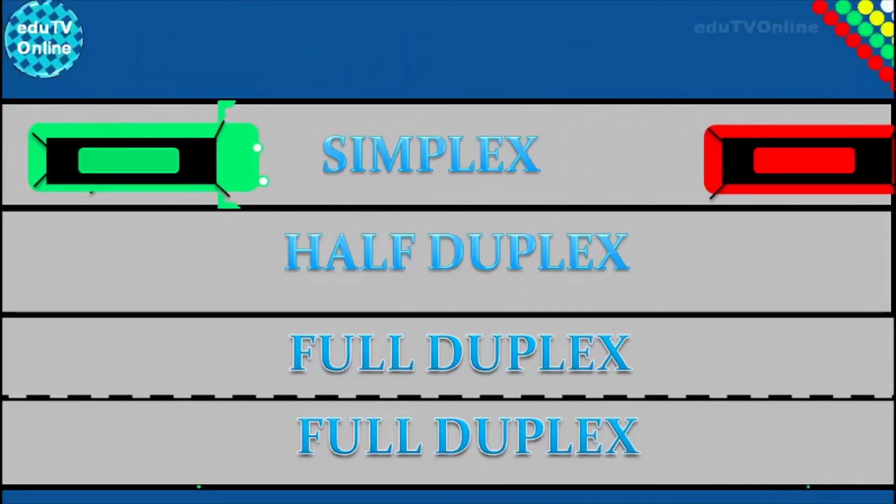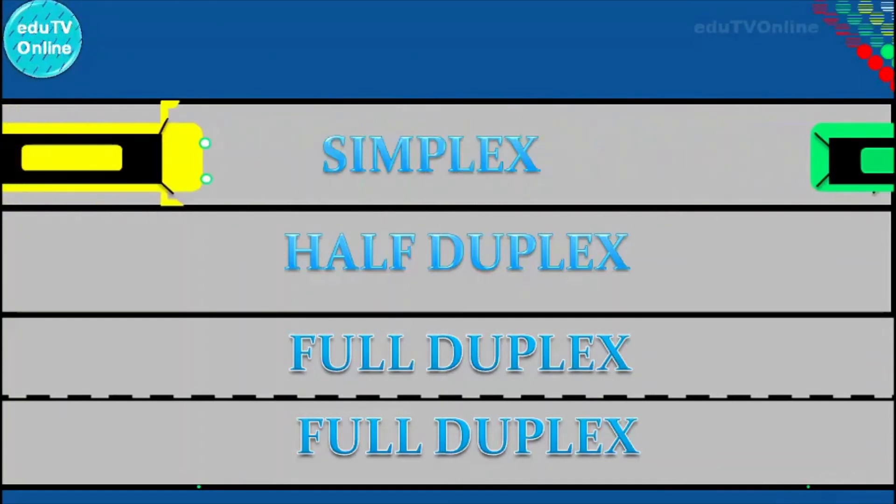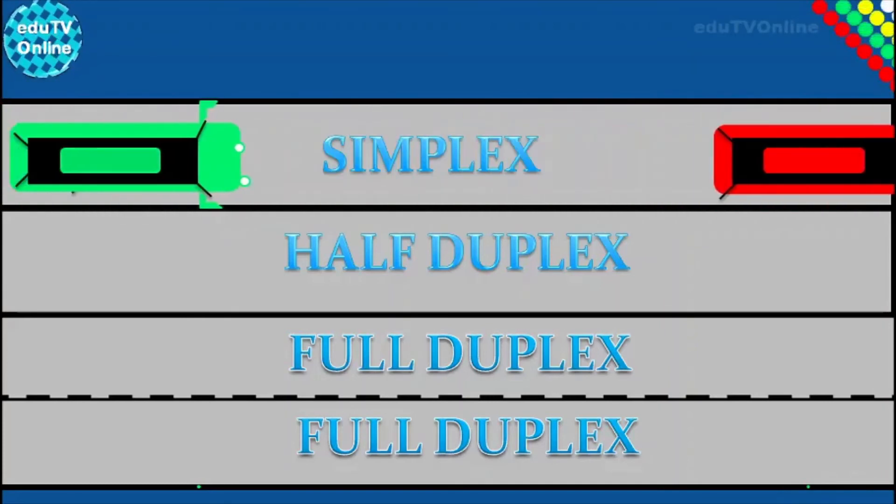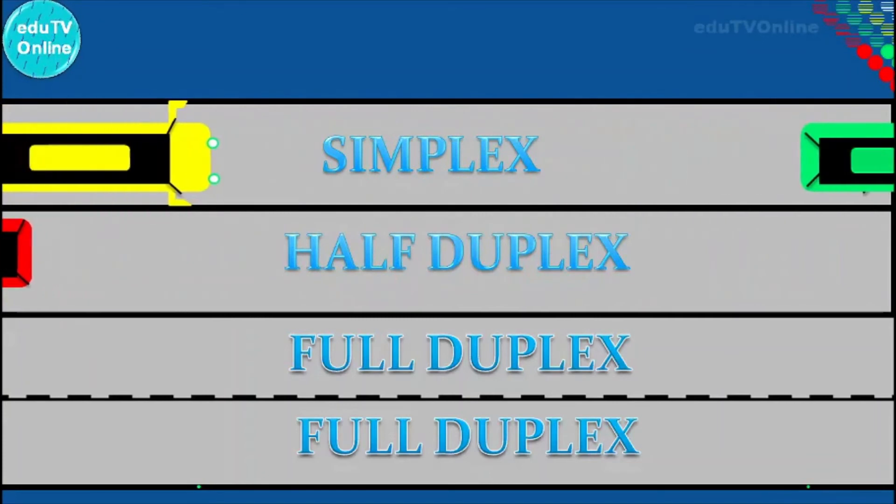So as a comparison between simplex, half duplex, and full duplex, you can use an analogy of cars on a highway where you have cars that travel only in one way direction, which can be considered as simplex data transmission.